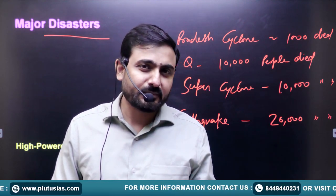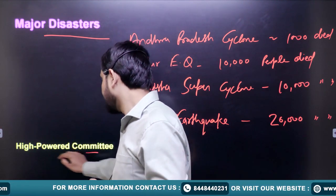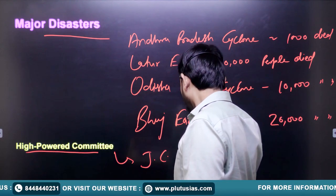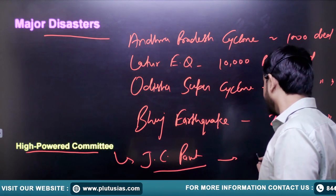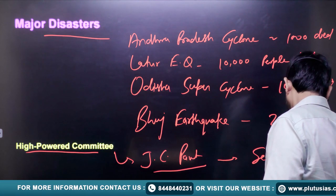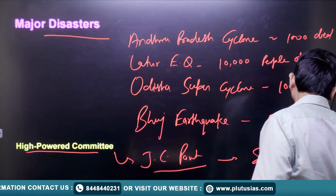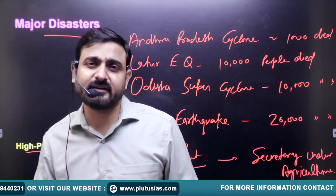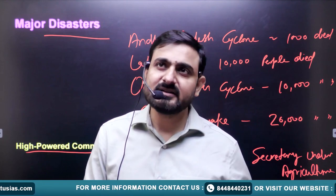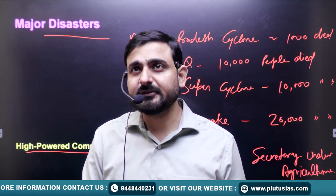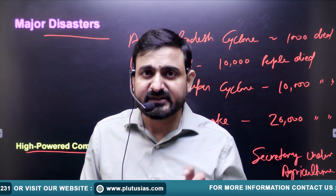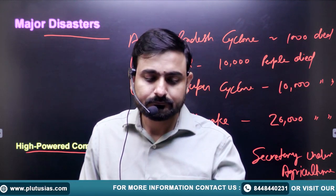The government established a high-power committee under G.C. Pant, who at that time was the Secretary under the Agriculture Ministry. The Agriculture Ministry was generally responsible for various kinds of disasters because most disasters majorly affected the agriculture sector — particularly productivity. That is why the Agriculture Ministry was very much centric towards such disasters.